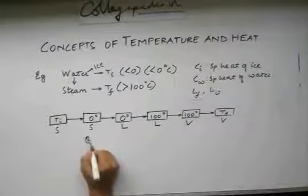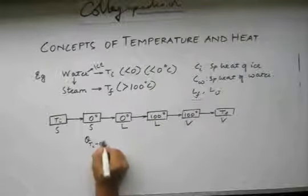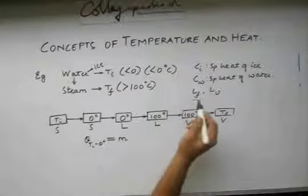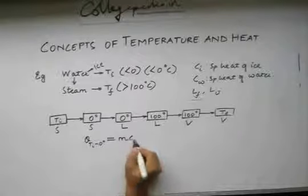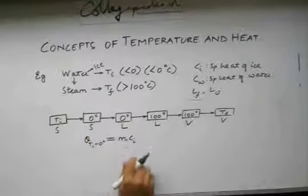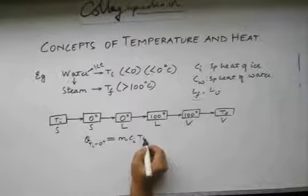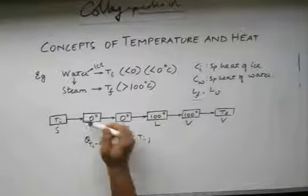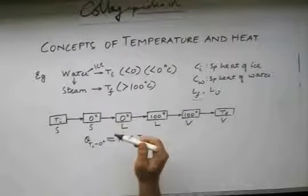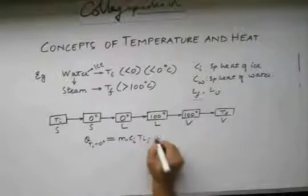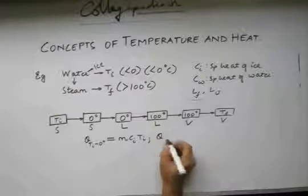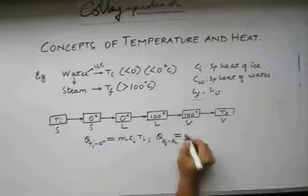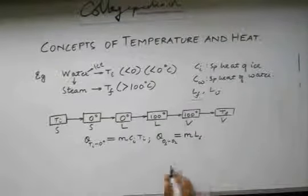The heat required from Ti to 0 degrees is going to be equal to M times the specific heat of ice times the temperature difference between 0 and Ti, which is nothing but Ti. The heat required for the phase change of ice to water is going to be M times the latent heat of fusion.